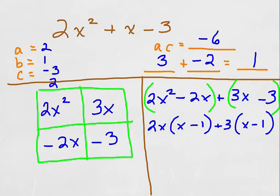And I know that the GCF would be 2x so that I would have x. And down here I would have minus 1 because negative 1 times 2x is negative 2x.